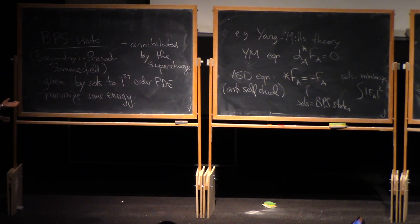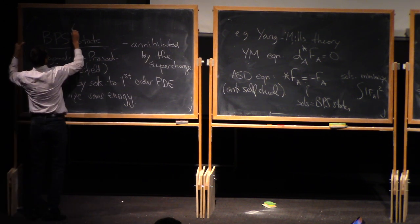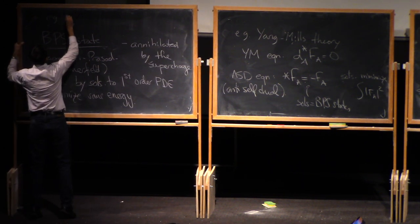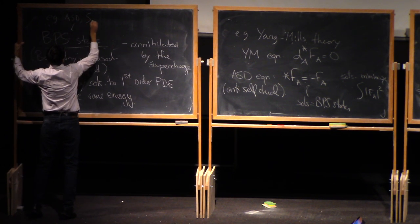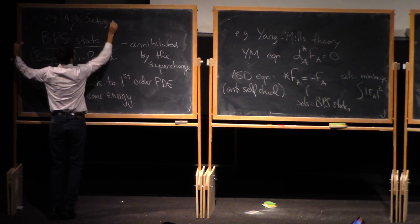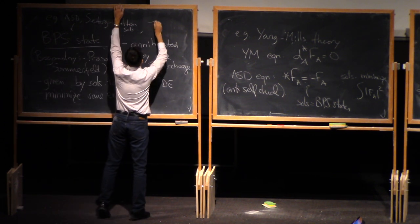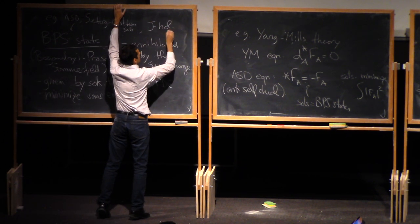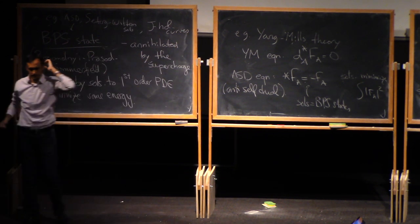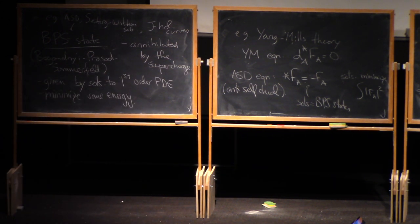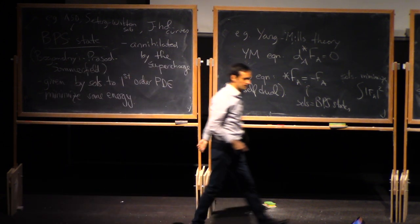So this is a second-order PDE, this is a first-order PDE. And furthermore, it minimizes the energy. So these solutions minimize the integral of FA squared. Right, so basically anti-self-dual connections are an example of BPS states, but a lot of other things that you've seen in mathematics are BPS states.